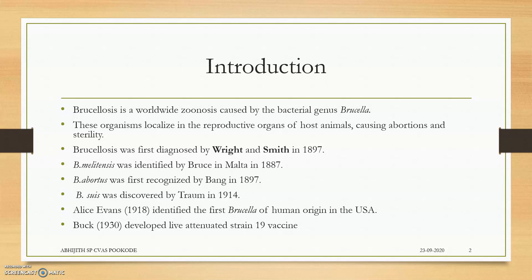Brucella abortus was discovered by Bang. The Abortus Bang's milk ring test is named after scientist Bang, who discovered Brucella abortus in 1897. Brucella suis was discovered by Traum in 1940, and Buck in 1930 developed a live attenuated strain 19 vaccine — that is a very important point.